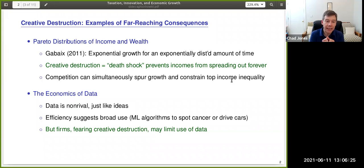You have entrepreneurs who create new ideas and their incomes grow exponentially. How long that growth continues governs how wide the income distribution is going to be. And of course, one of the key things that stops their incomes from growing is creative destruction. So creative destruction functions as a death shock that prevents incomes from spreading out forever. And an important thing that that gives rise to is the possibility that competition can simultaneously spur growth and constrain top income inequality.